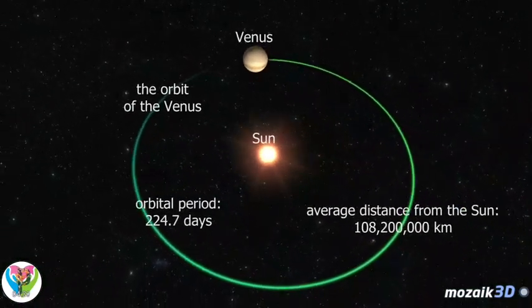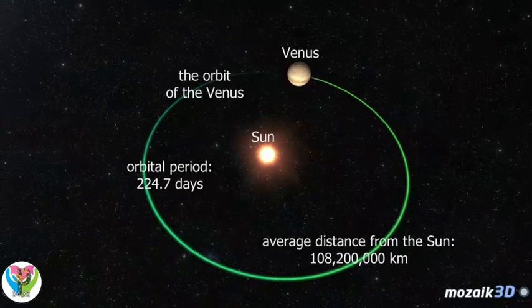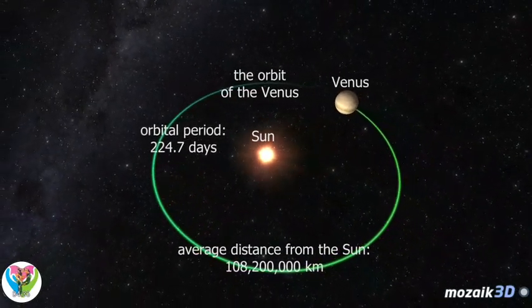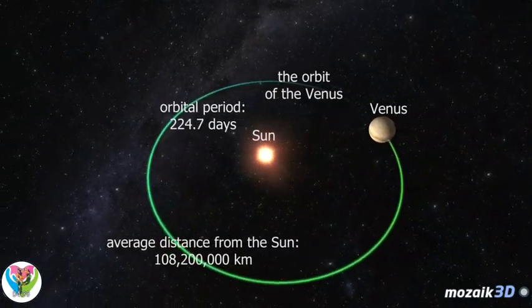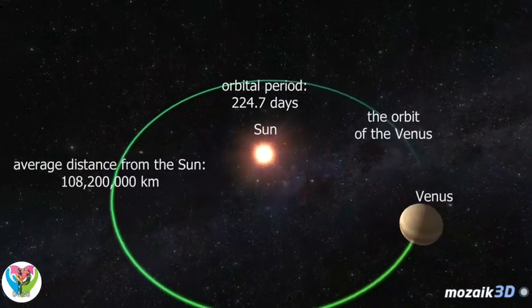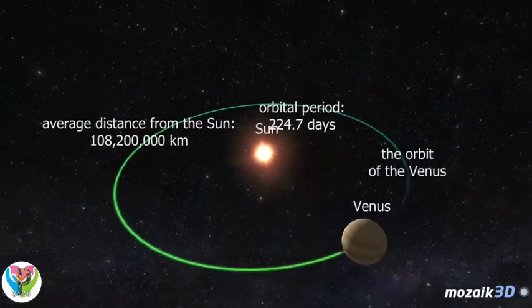Venus rotates in a direction opposite to its orbital direction. It is the most slowly rotating planet, with a rotation period of 224 Earth days. Venus has a very weak magnetic field. The solar wind is in direct interaction with the planet's ionosphere.